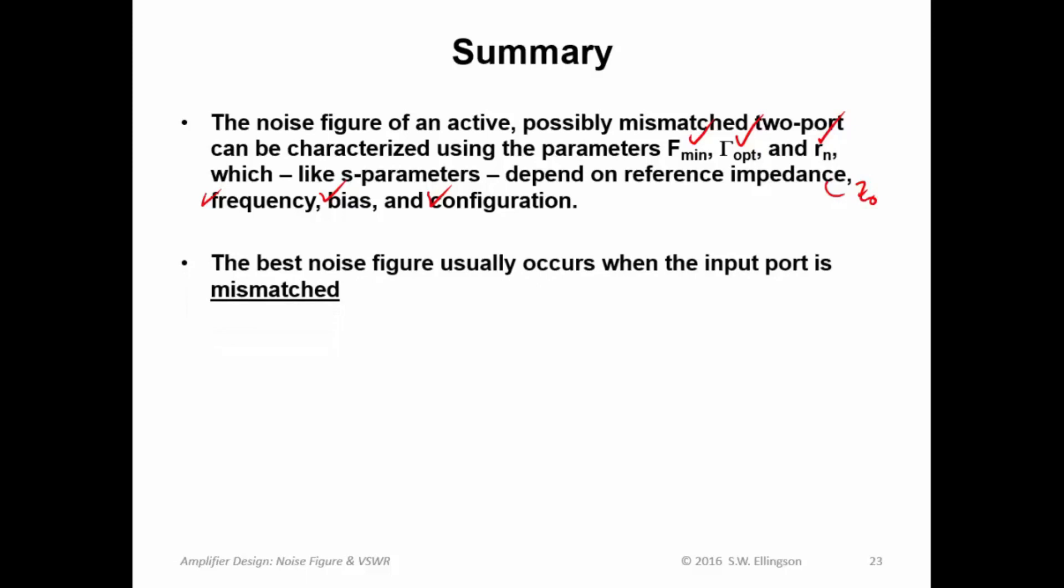The best noise figure normally occurs when the input port is mismatched. This is a fact that you must keep in mind. The best noise figure normally corresponds to an input mismatched transistor. So, for example, simultaneous conjugate matching, which maximizes gain, will rarely give you the best noise figure.